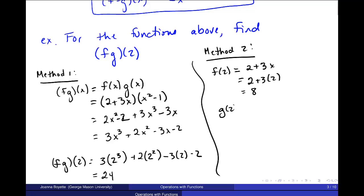G of 2 is equal to, and g of x is x squared minus 1, so I put in 2 where there's an x and I get 4 minus 1 is 3. So fg of 2 is f of 2 times g of 2. So I get 8 times 3, which is 24.